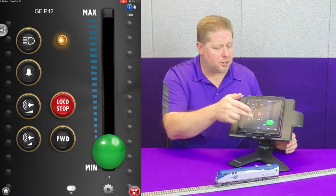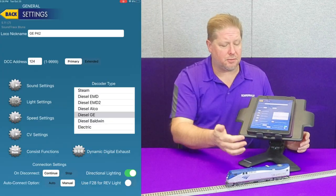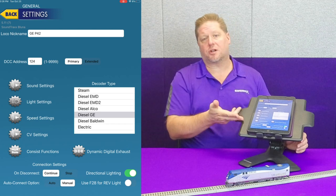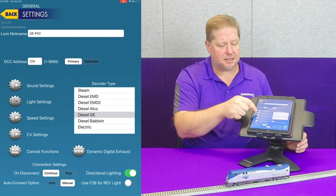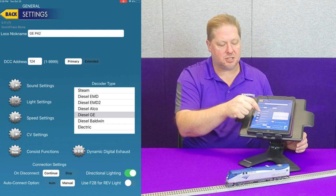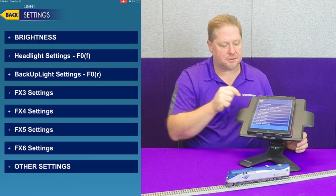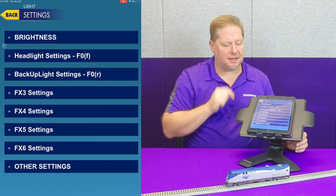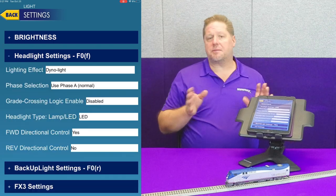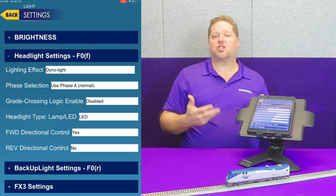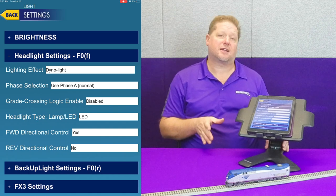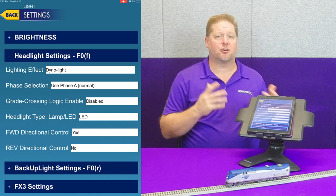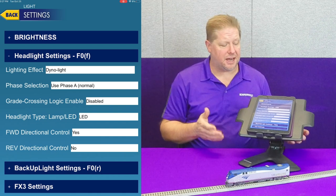We're going to click our gear setting at the bottom to get to our settings, then go to the second gear which is light settings. Up at the top you're going to see headlight. We're going to change the headlight to the different lighting effects so you can see the lighting pattern of each one.